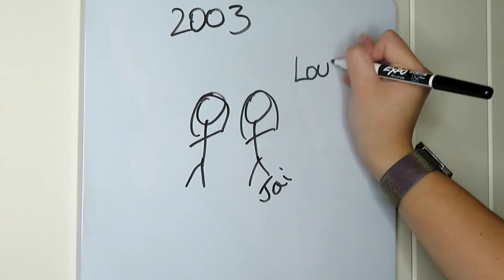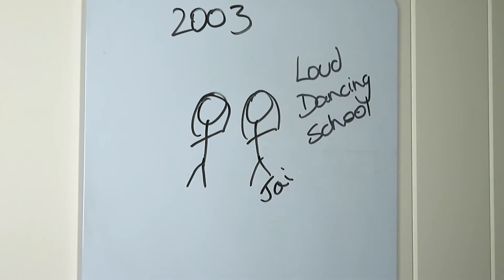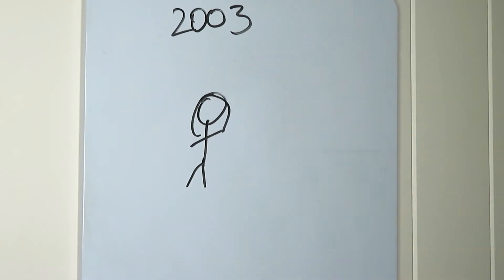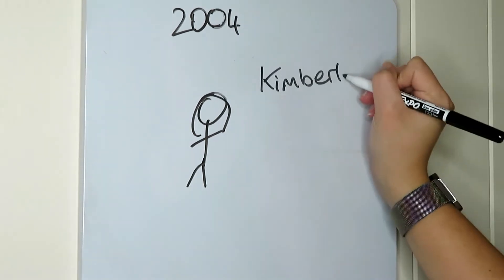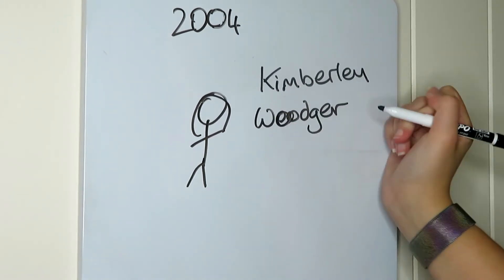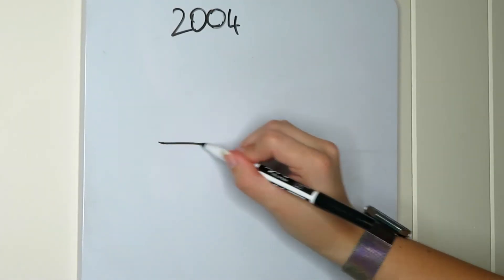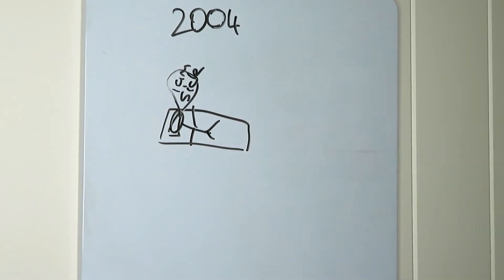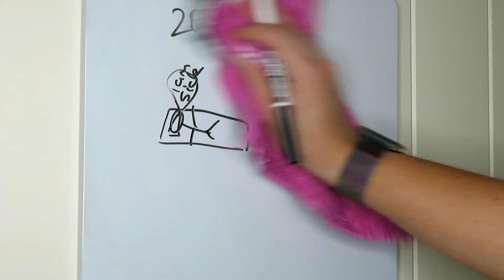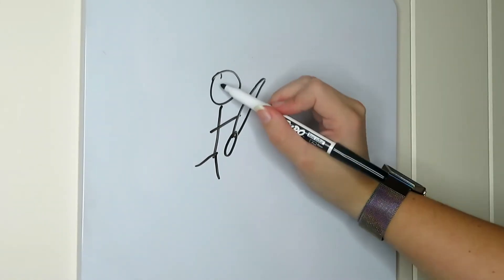I started tap dancing at the age of six with one of my best friends at the time, Jay, at a dancing place called Loud. After a year, Loud closed down so I went to another dance school called Kimberley Woodger Dance Academy. Jay went somewhere else. There I did big baby beginners tap, junior beginners tap, and jazz. It didn't last very long as I kept getting sick and had to have a lot of time off, so it wasn't worth the effort.